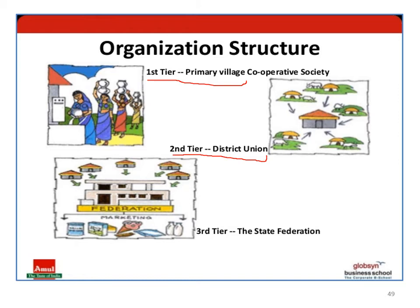The third tier is the state federation - in Gujarat, this is the GCMMF, Gujarat Cooperative Milk Marketing Federation. It controls all district-level dairy cooperatives - all second-tier cooperatives in Gujarat.